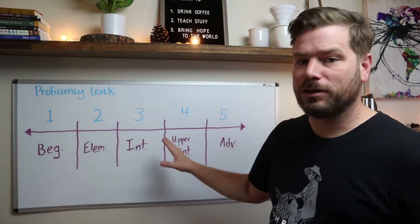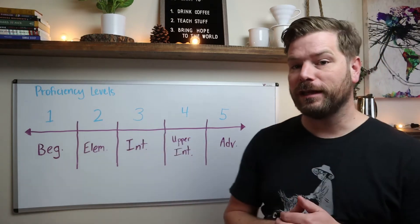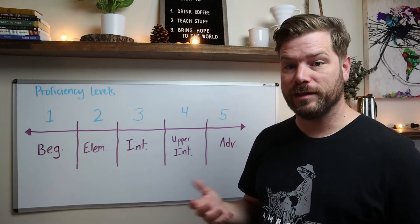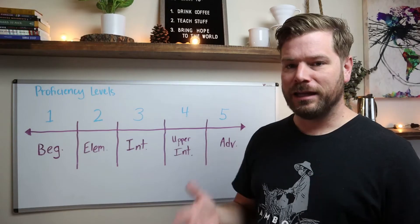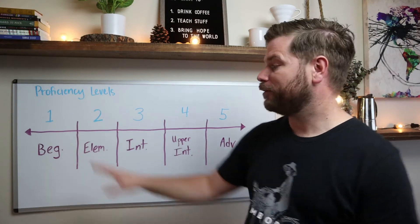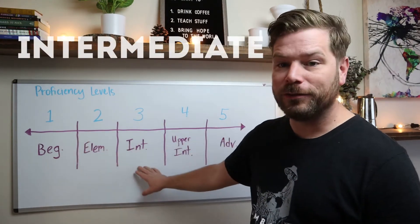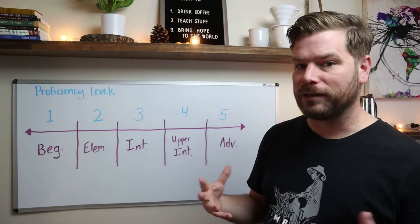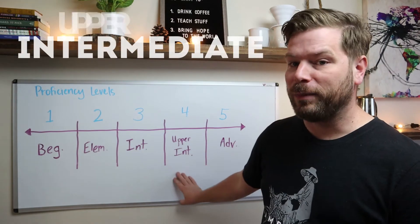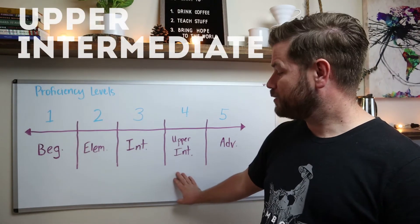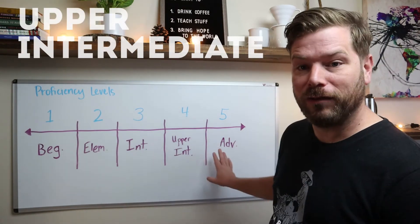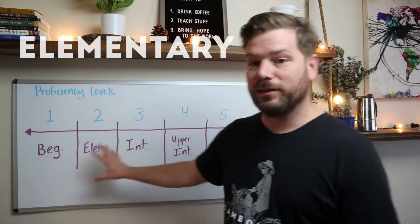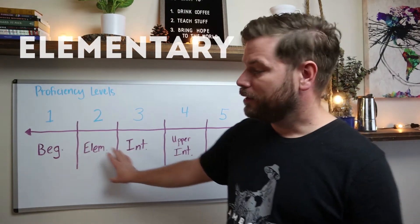However, here in TESOL we're going to be using five different proficiency levels, and many teachers in schools will use something similar. In its most basic form, you usually have a beginner, an intermediate student, and an advanced student. In TESOL, to add a little complexity, we're also introducing upper intermediate — a student between intermediate and advanced — and an elementary level, which is a student somewhere between beginner and intermediate.